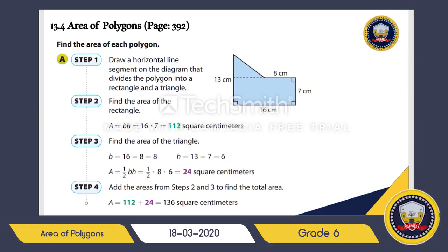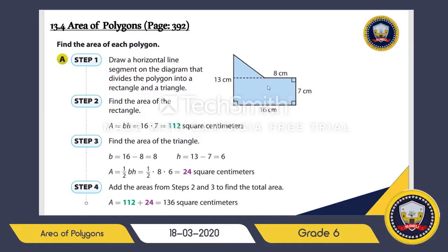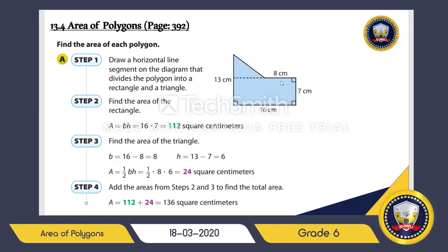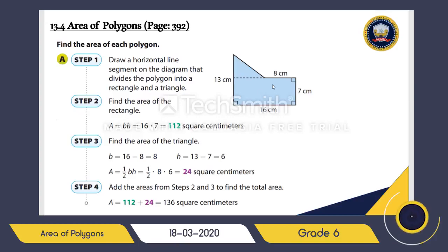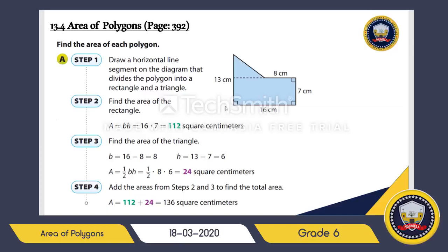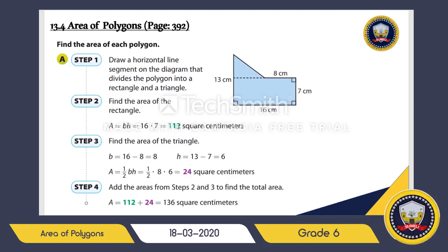Let's have another example. This shape is also a polygon — it has one, two, three, four, and five sides. To find the area, I'm going to draw a horizontal line, dividing this shape into two simple shapes: a rectangle and a triangle. For the rectangle, the area equals base times height: 16 times 7, which is 112 square centimeters.